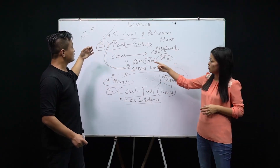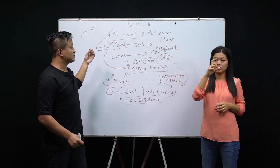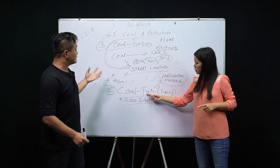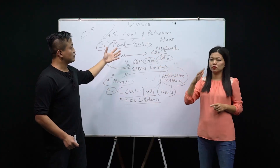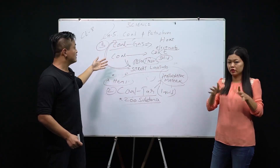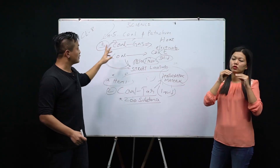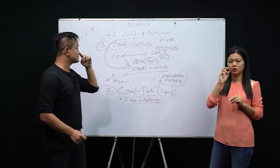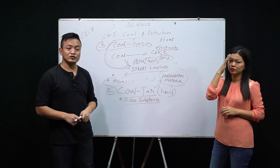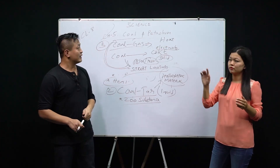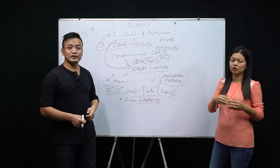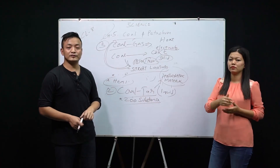We have studied about coal — how it is formed from dead vegetation, the process of carbonization, the uses of coal, and the three important products: coke, coal tar, and coal gas. Tomorrow we will continue with petroleum. Please take notes of what we have studied, go through it, and I'll see you tomorrow. Thank you.